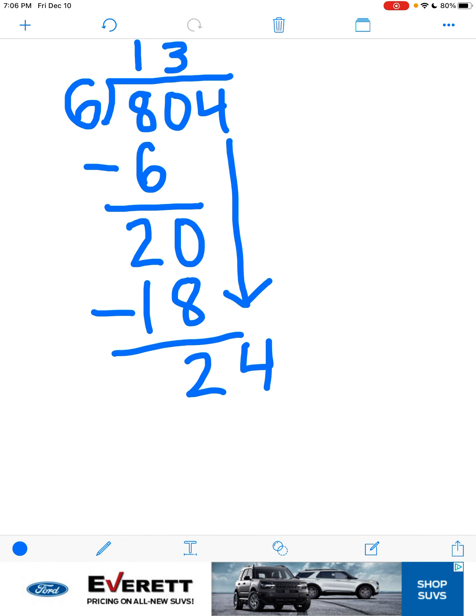It can go in four times, then six times four, that's gonna be twenty-four, and there's no remainder.